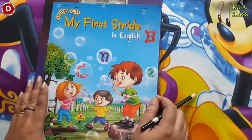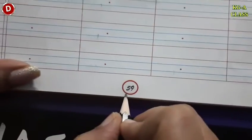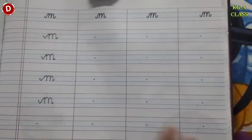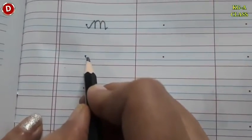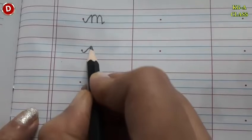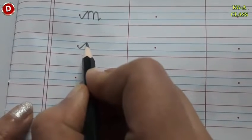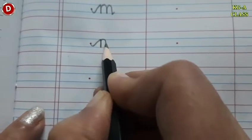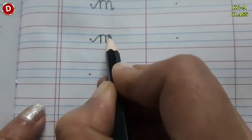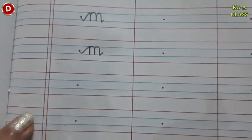Children, now bring your My First Ride in English workbook. Open page number 59. We will write cursive M in this page, so you have to finish this whole page. Put your pencil on the pink dot. Like this — you have to turn and then go up, touch the first blue line, then make a standing line, come to the second blue line, again go up on the same line. Like this — and make a little loop. In this way, you have to write cursive M.